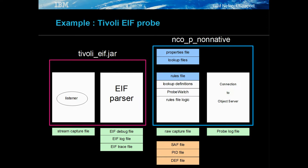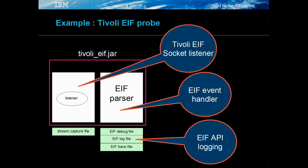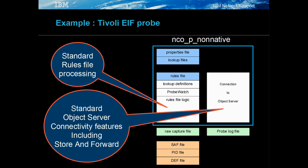The Tivoli EIF probe is an example of a non-native probe. These are Java-based probes that use the native NCO_P_non-native binary. The Tivoli_EIF.jar handles support and parsing of the EIF events using the Java EIF API. The EIF API includes additional logging, and stream capture logging is also available to assist further troubleshooting. The non-native probe uses the common features and rules file processing, and because the object server features are common to the non-native probes, it makes them easier to configure and debug.